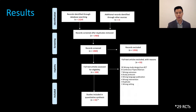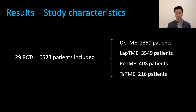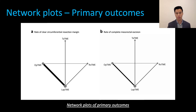Using the PRISMA guidelines, our search screened through 1,524 studies and yielded 42 manuscripts consisting of 29 RCTs. In total we have 6,523 patients included. These were the geometrical network plots plotted for each individual outcome. The thickness of the line between two nodes denotes the number of direct evidence across two interventions, and as you can see the bulk of direct evidence occurs between open surgery and laparoscopic surgery.